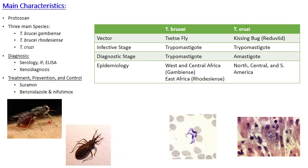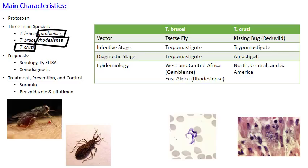So it's a protozoan. There are actually two species of trypanosomes that cause human disease. T. cruzi is one species. The other species is T. brucii, and within T. brucii we have subspecies known as gambiense and rhodesiense. We'll talk about these because they actually do have slightly different presentations.